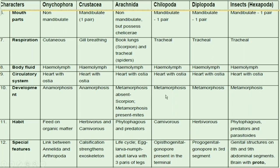Regarding feeding habits: Onycophora animals feed on organic matter. Crustaceans are herbivores and carnivores. Arachnida are phytophagous and predators. Chilopoda are carnivores. Diplopoda are herbivores. Insects are phytophagous, predators, and parasitoids.